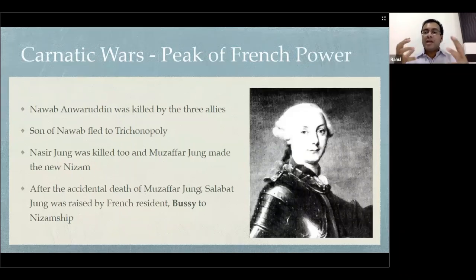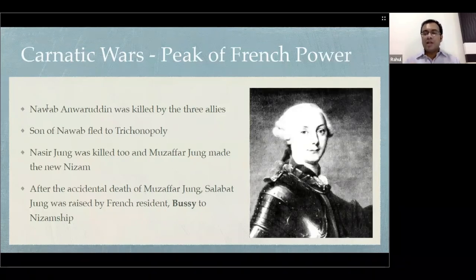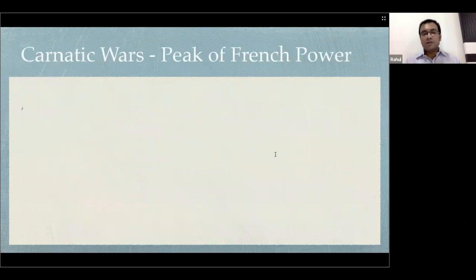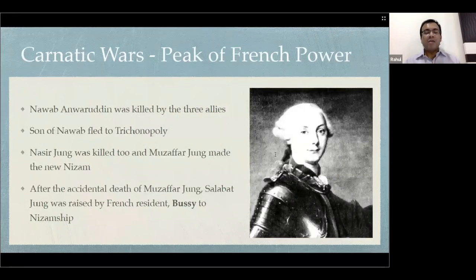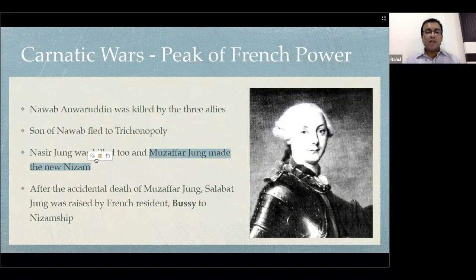This was the peak of French power. In the Carnatic, Nawab Anwaruddin was killed by the three allies — Chanda Sahib, Muzaffar Jung, and the French together. The son of the Nawab fled to Trichinopoly. Similarly, in Hyderabad, Muzaffar Jung was made the new Nizam and Nasir Jung was killed.